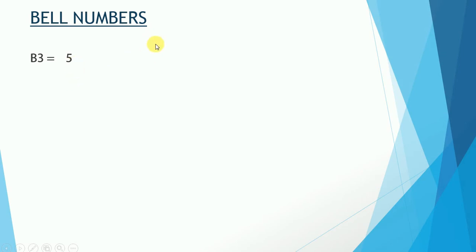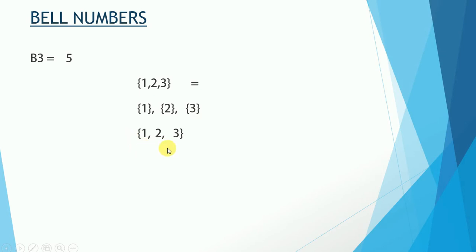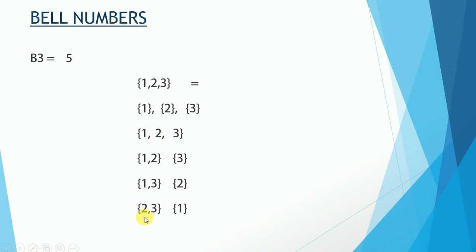B_3 is 5, meaning a set of three integers {1, 2, 3} can be partitioned in five ways. First: all individual — {1}, {2}, {3}. Second: all together — {1,2,3}. Third: {1,2} and {3}. Fourth: {1,3} and {2}. Fifth: {2,3} and {1}.